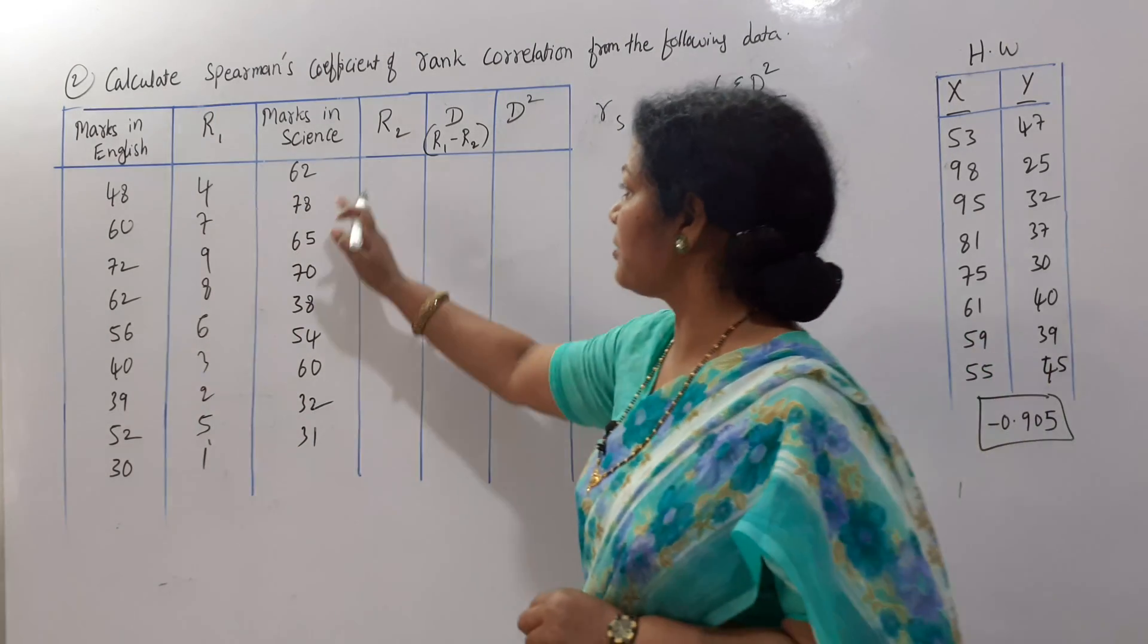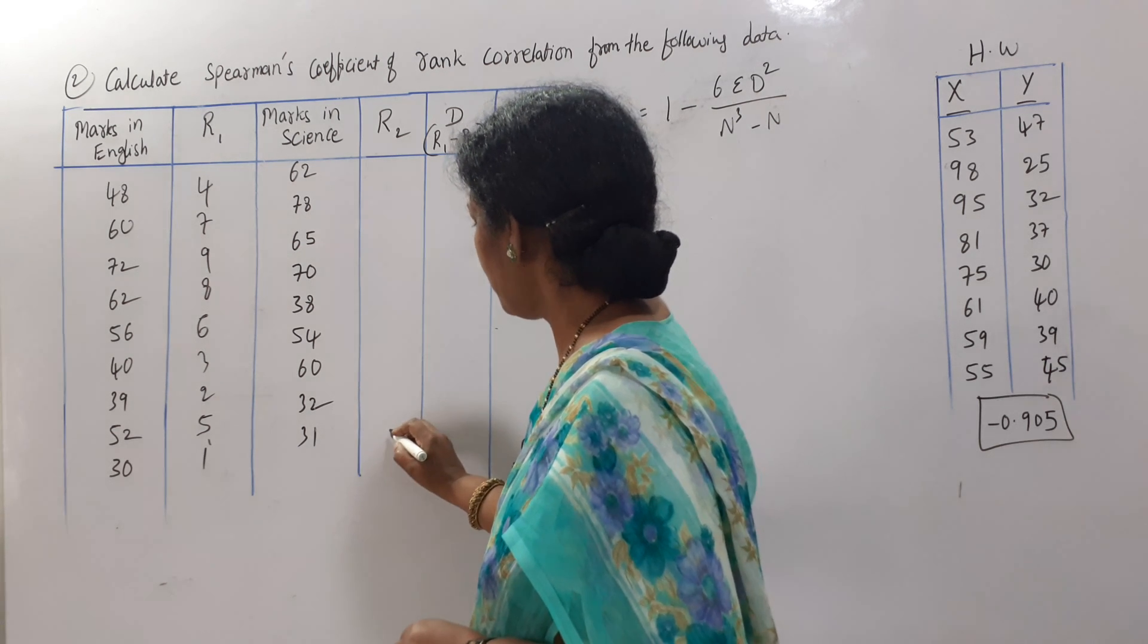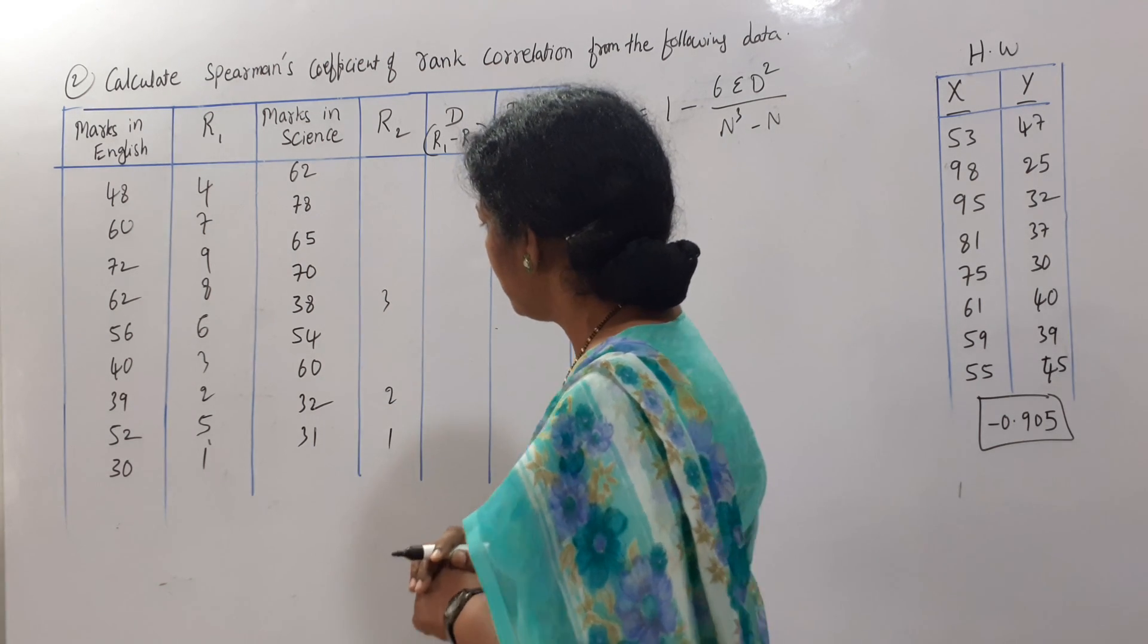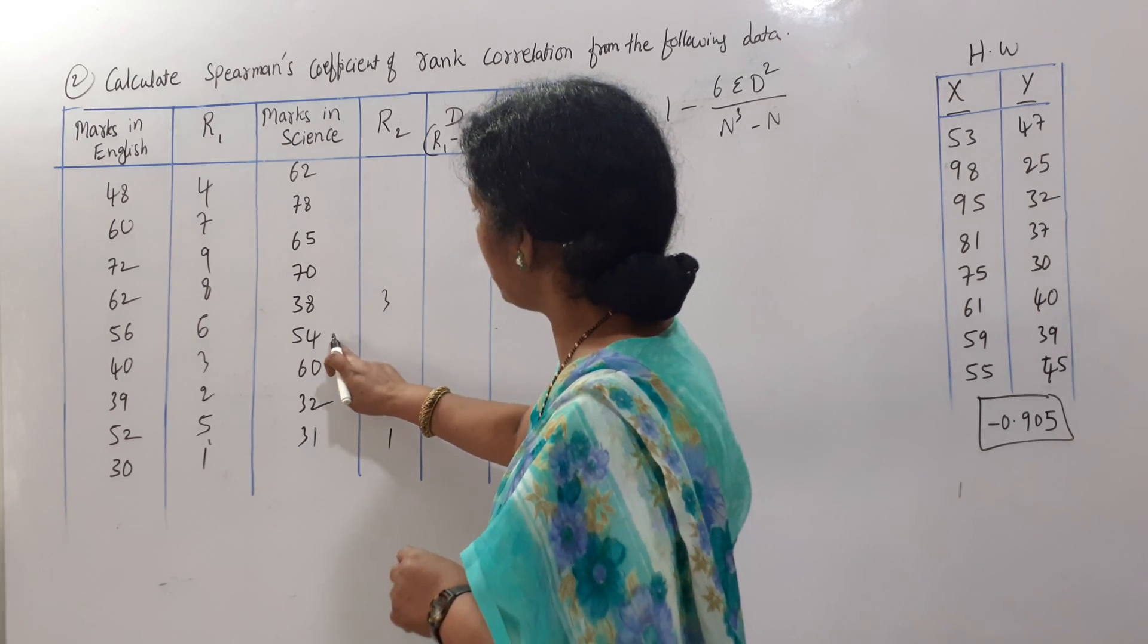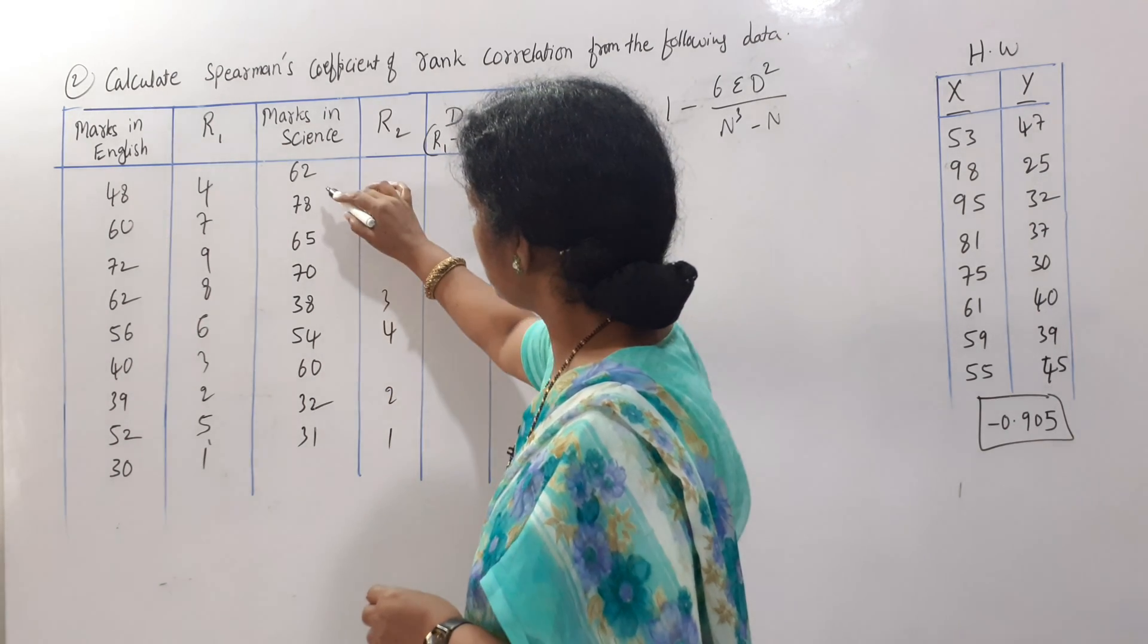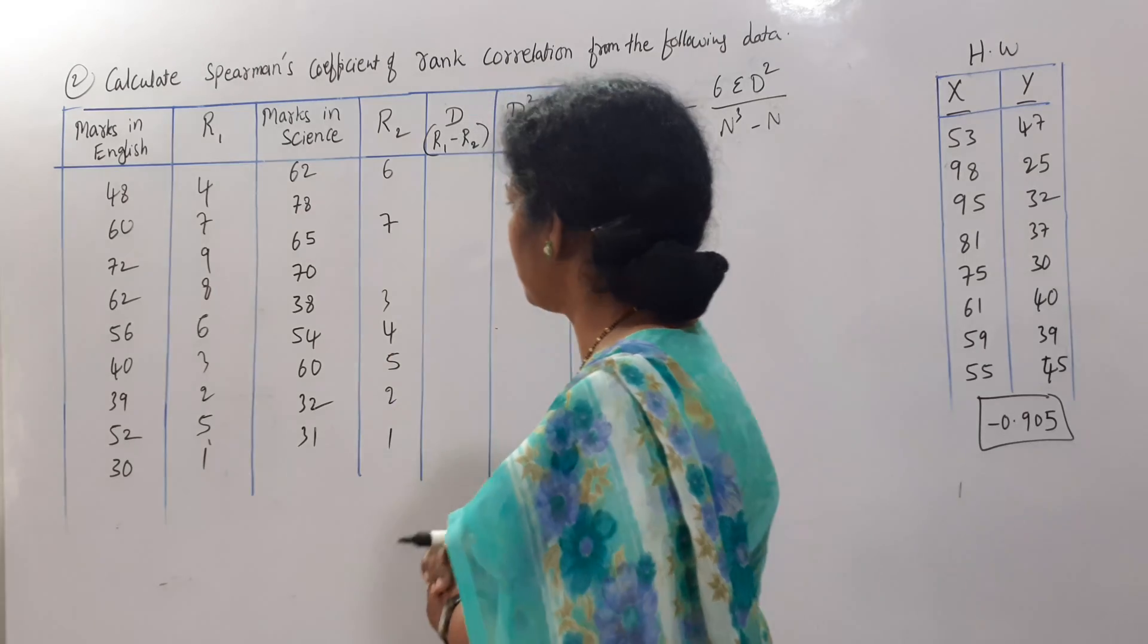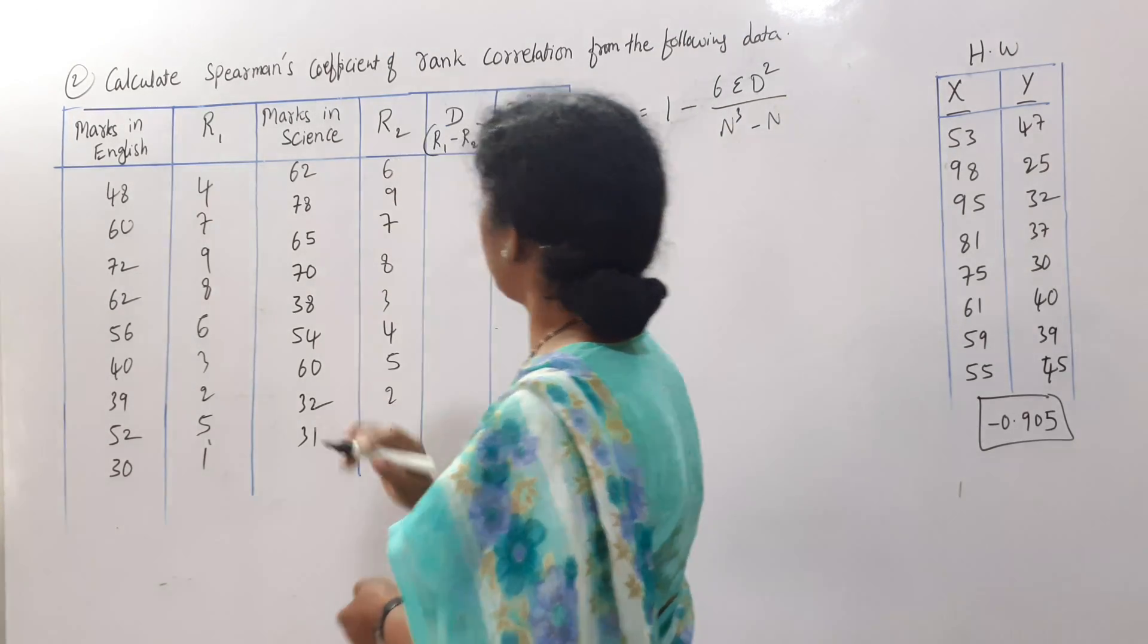Minimum number is here, 31, 1st rank, 32, 2nd rank, 38, 3rd rank. 40s are there, no. 50s, only 1 fifty, this is 4th rank. Next, 60s, we have 60, 62, 65 means 5th rank, 6th rank, 7th rank, 70, 78 means 8 and 9. Ranks we have given.